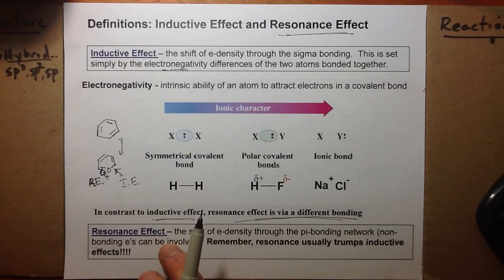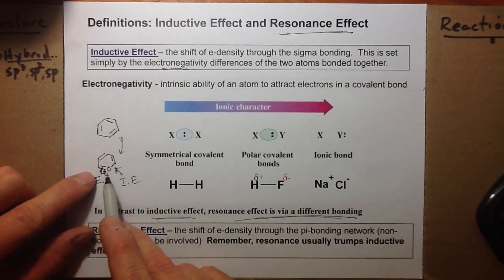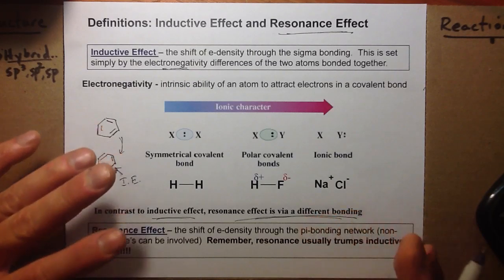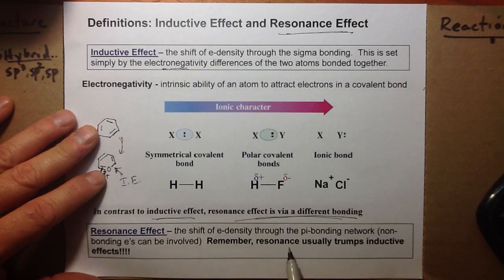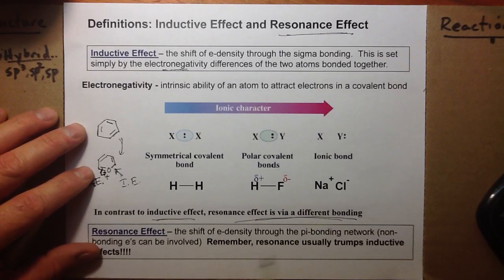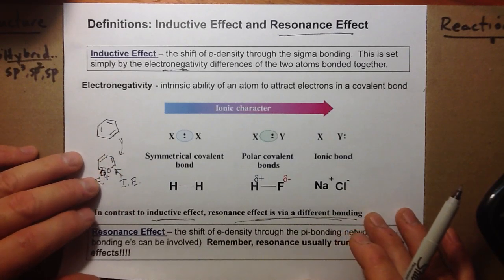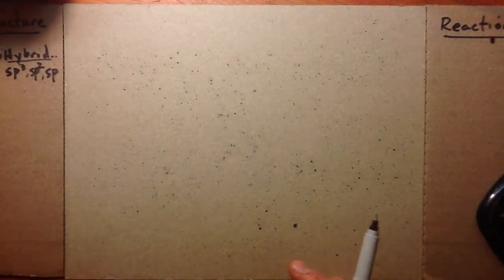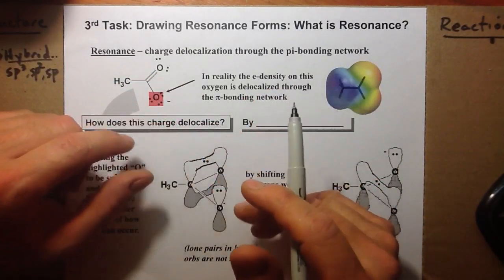So let's finish with this reading of the definition, look at these examples of just inductive effect, and let's move into how we draw resonance forms to capture this effect. Resonance effects is the shift of electron density through the pi bonding network. Now this isn't for all cases, but for many, many cases when drawing resonance forms, you're looking at electron movement through the pi bonding system. Non-bonding electrons can be involved. Remember, resonance usually trumps inductive effects. Why? Because it's involving the movement of weaker bonded electrons. They can move more easily.